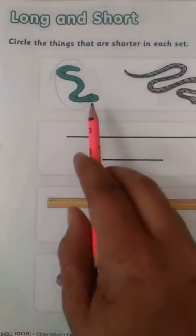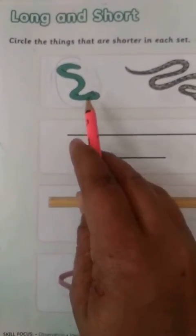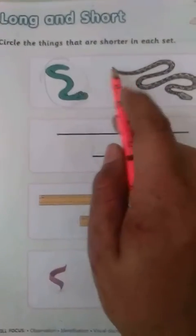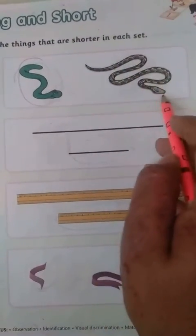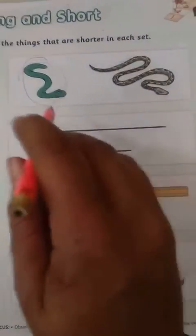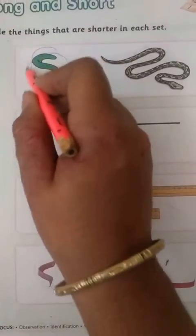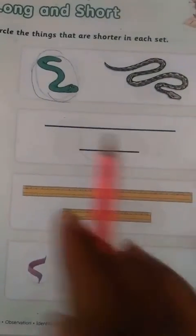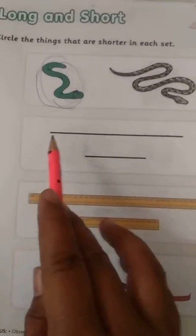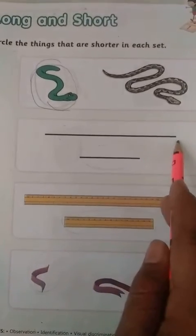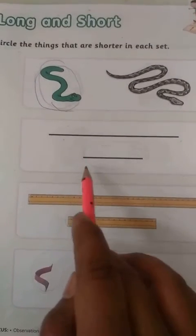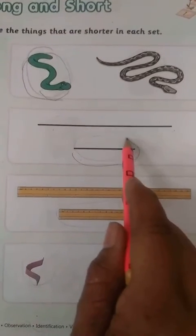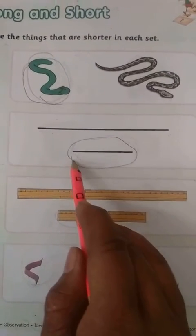What is this, children? This is a serpent. This one is short and this one is long, so we will circle it like this. Next, here two lines are given. This is long and this one is short, so this is shorter and we have to circle over it like this.